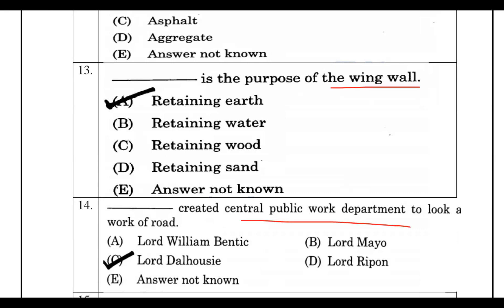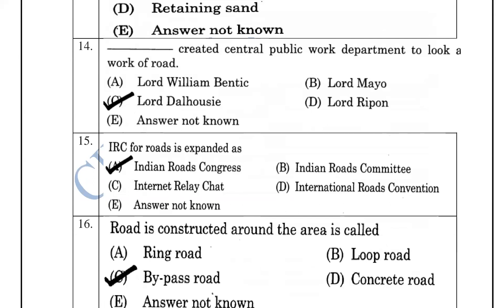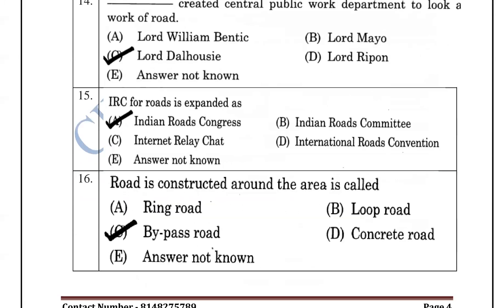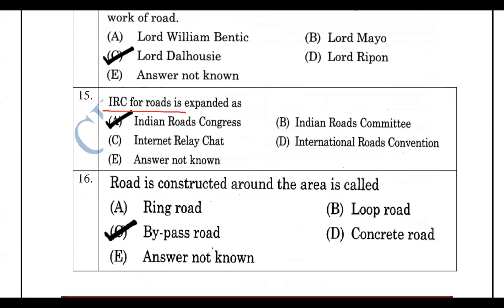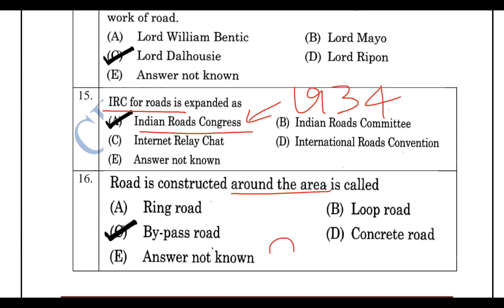CPWD stands for Central Public Works Department, headquartered at Plot Dunn House. IRC stands for Indian Road Congress, which was established in 1934. A bypass road is a road constructed around a busy area to divert traffic away from congested zones.